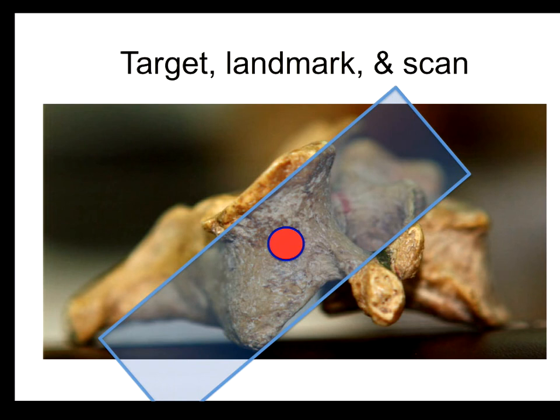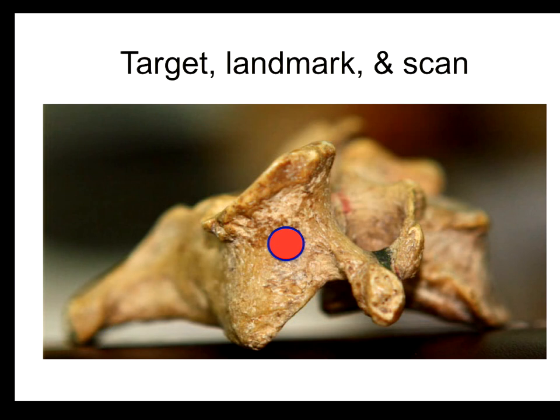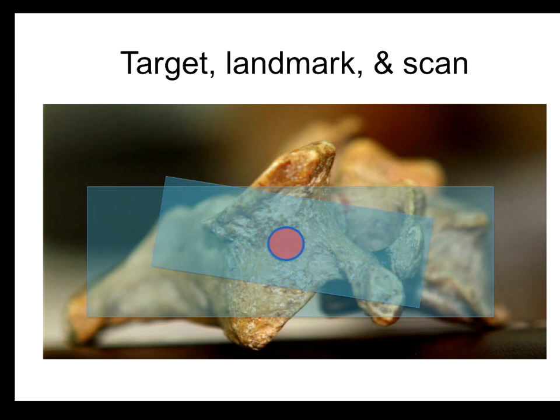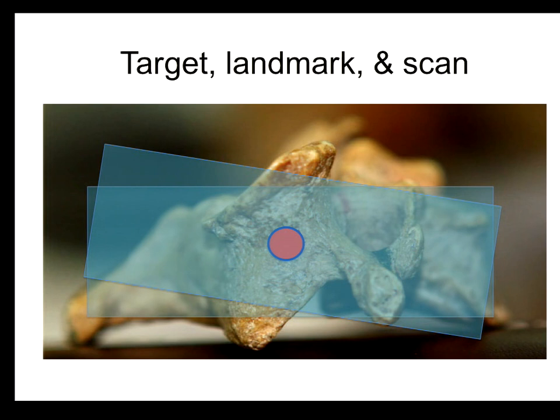Originally I introduced the sonar anatomy along the facet joint plane, but in daily practice I usually scan more horizontally. Sometimes, when scanning the lower levels, you can scan in a different way.